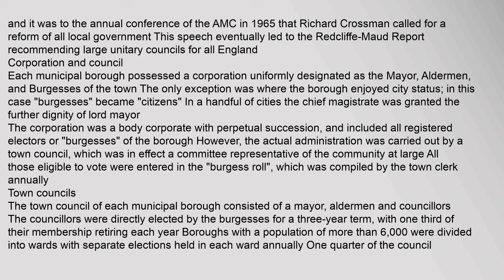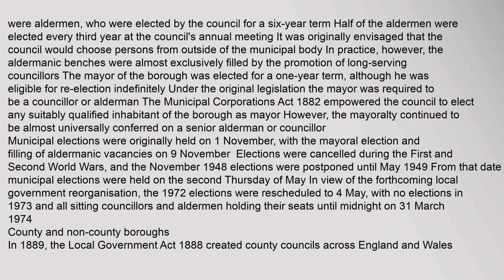The town council of each municipal borough consisted of a mayor, aldermen and councillors. The councillors were directly elected by the Burgesses for a three-year term, with one-third of their membership retiring each year. Boroughs with a population of more than 6,000 were divided into wards with separate elections held in each ward annually. One quarter of the council were aldermen, who were elected by the council for a six-year term; half of the aldermen were elected every third year at the council's annual meeting. It was originally envisaged that the council would choose persons from outside of the municipal body; in practice, however, the aldermanic benches were almost exclusively filled by the promotion of long-serving councillors.